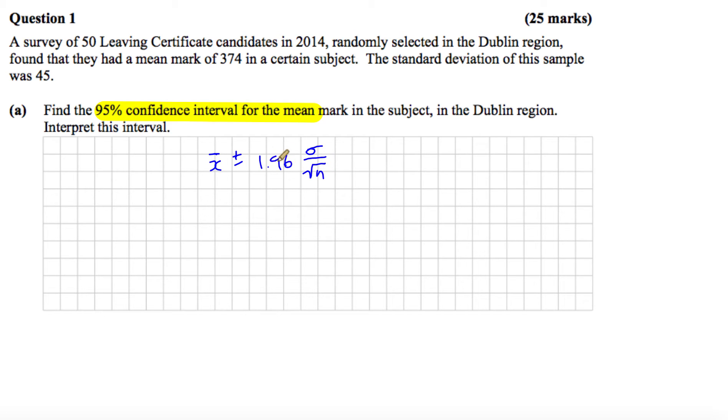And this 1.96 then is linked to the 95% figure here. So this is the formula you need to know, you can memorize this formula. So we're just going to find the interval using this formula. So x bar is the sample mean, and that's given to us as 374. This is for the sample of 50. So it's going to be 374 plus or minus 1.96.